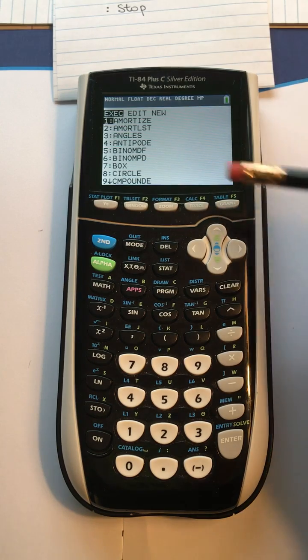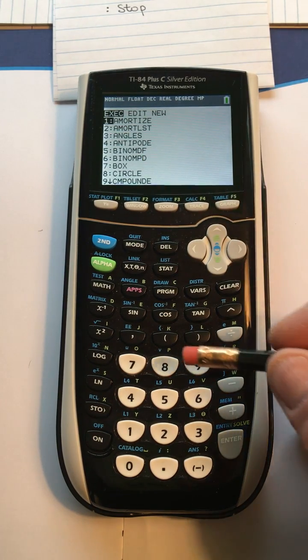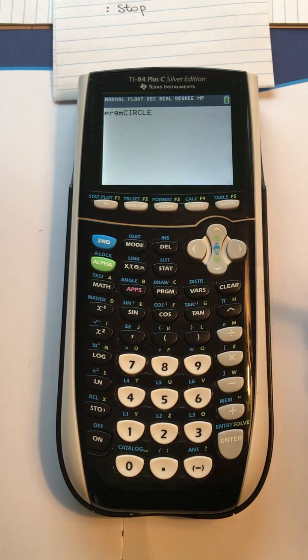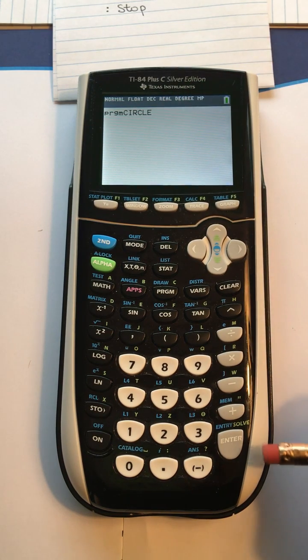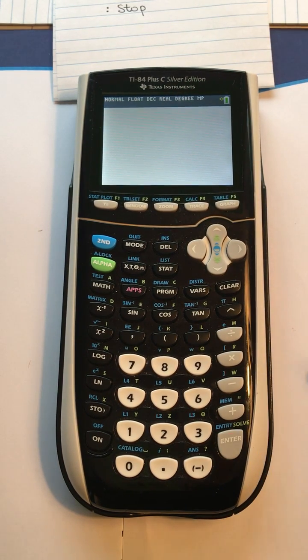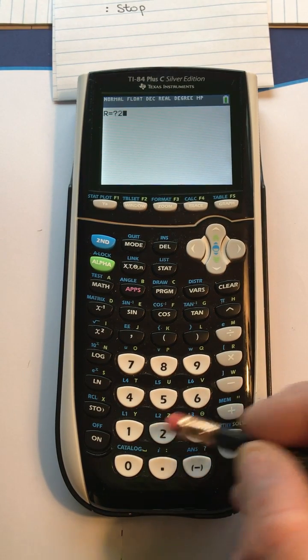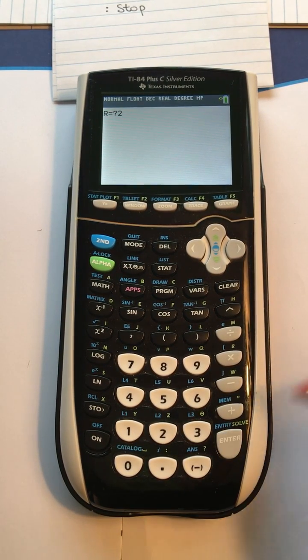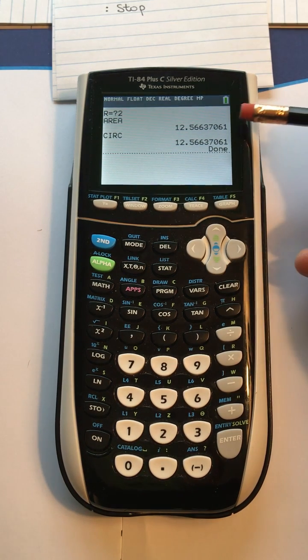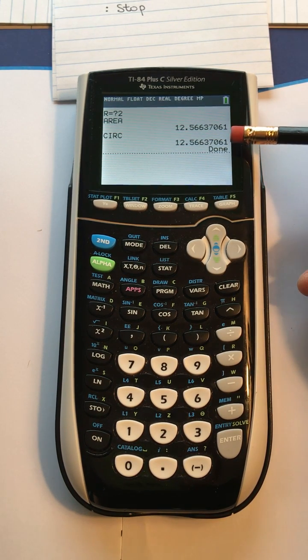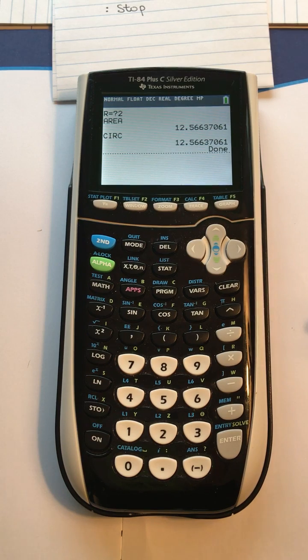Press program, and then we select CIRCLE, which is number eight, and it says okay, that's what you want to do. We press enter to say yes, and then we put a radius in there, and we'll put in two just for an example. We do that, and the area comes out to be twelve point something, and the circumference comes out to be twelve point something.